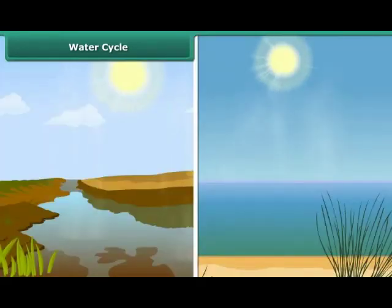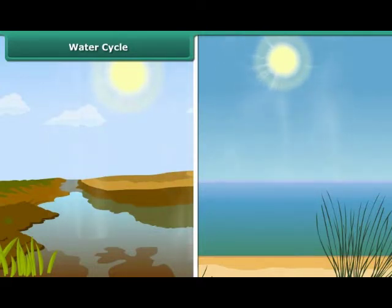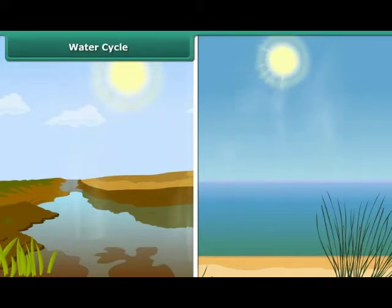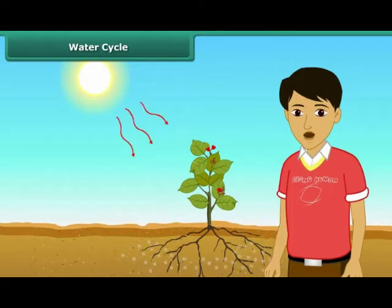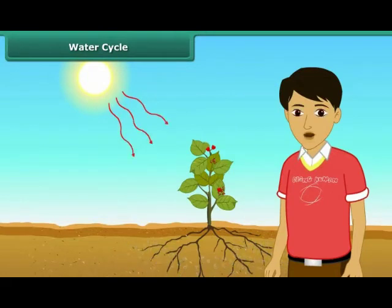Water in oceans, seas, rivers, etc., gets heated up by the sun and turns into vapor — this process is known as evaporation. Plants absorb water from the soil, use a part of it to prepare their food, and release the excess water into the air as water vapor. This process is called transpiration.